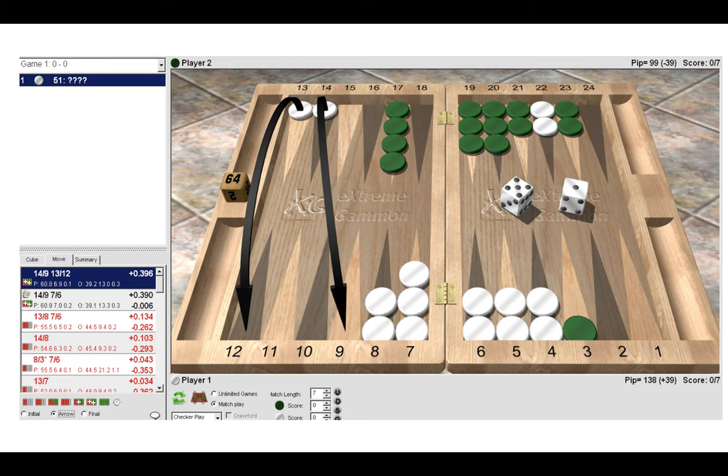Well done if you got this one correct. The correct move is 14 to 9, 13 to 12. Actually, the second best move, which is close, also slots the back of the five prime. Anything besides slotting the back of a prime would be a very big blunder. Playing safe, 13 to 8, 7 to 6, would be a very big mistake. Here it looks risky by slotting the back of the prime because we're giving green's sixes to hit us, and green has a four point board, a stronger home board.